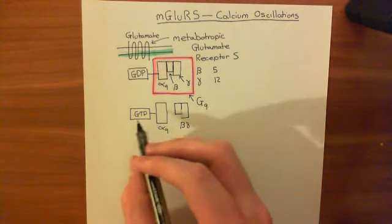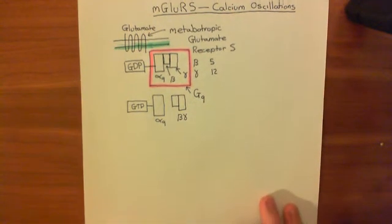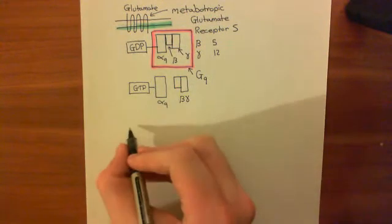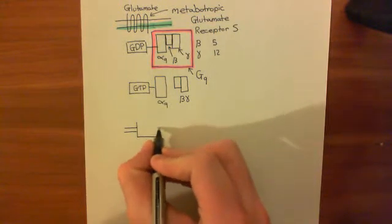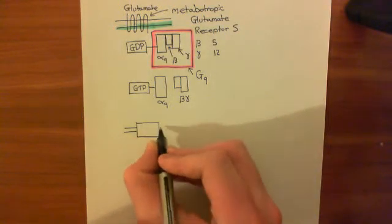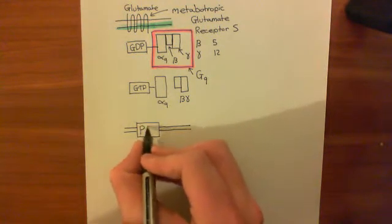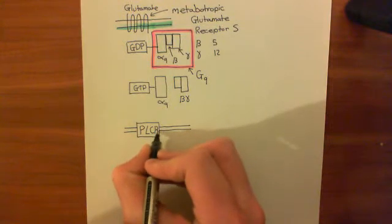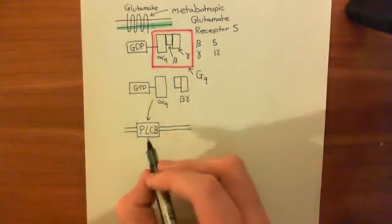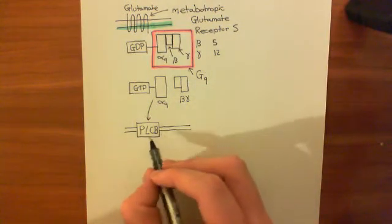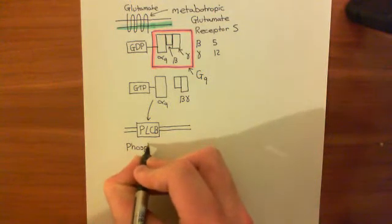What does alpha-Q GTP do next? It activates an enzyme that is in the phospholipid bilayer of the cell. The name of this enzyme is phospholipase C — specifically phospholipase C beta. The alpha-Q GTP molecule goes and binds to and activates phospholipase C beta.